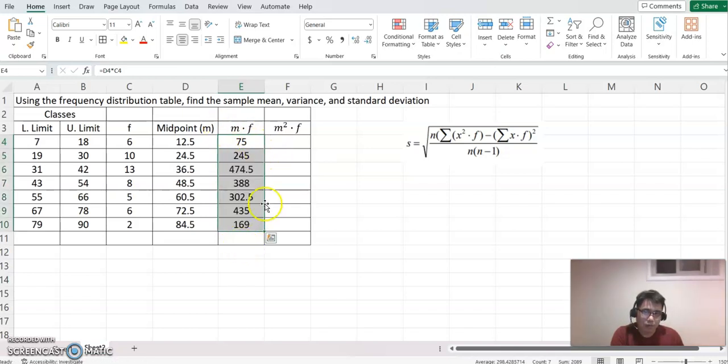It will calculate for you. Now, importantly, you need to find out total frequency. Click right below the bottom of the frequency here, click AutoSum, and it will highlight for you. That's the total frequency. For total value, click AutoSum again. That will be the total sum of this data value.